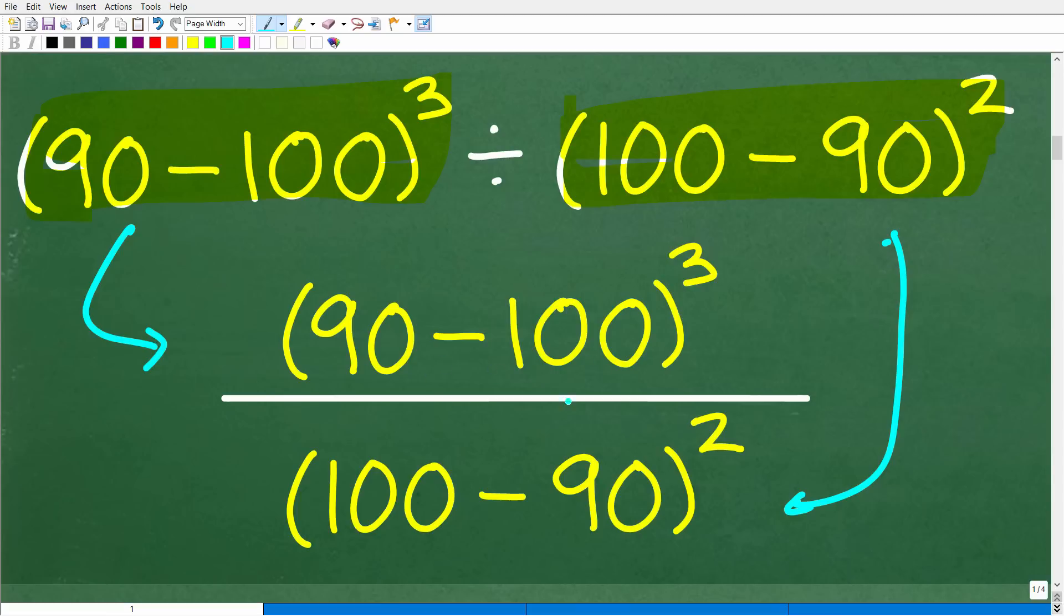We're taking this and we're dividing it by this. So when you have a fraction, you could take, let's say I had this expression right here. This right here, this fraction, means 90 minus 100 cubed being divided by this, okay? Now, there's a real advantage to doing the problem this way, and, of course, I'll show you that in just one second.